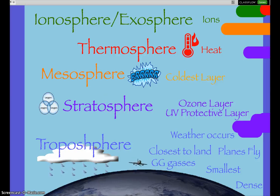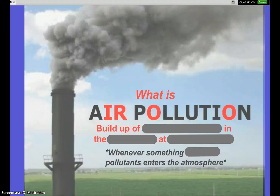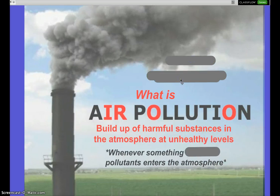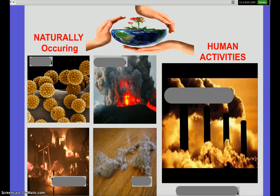We're focusing on the troposphere for the majority of the unit, and then we'll talk about ozone — hopefully you'll never confuse the two. So let's define what air pollution is: harmful chemicals — or rather substances, because some of the harm comes from particles, not just chemicals — that build up in our atmosphere at a level considered unhealthy or causing harm. Pollutants can be naturally occurring or from human activities.